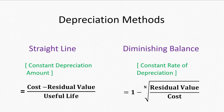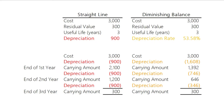There are basically two common depreciation methods: the straight-line method and the diminishing balance method. The straight-line method gives a constant amount of depreciation every year, whereas the diminishing balance method gives a constant depreciation rate. For example, assume an asset purchased at a cost of $3,000 with a residual value of $300 and a useful life of three years. Under the straight-line method it depreciates by $900 every year, and under the diminishing balance method it depreciates by around 54% every year.